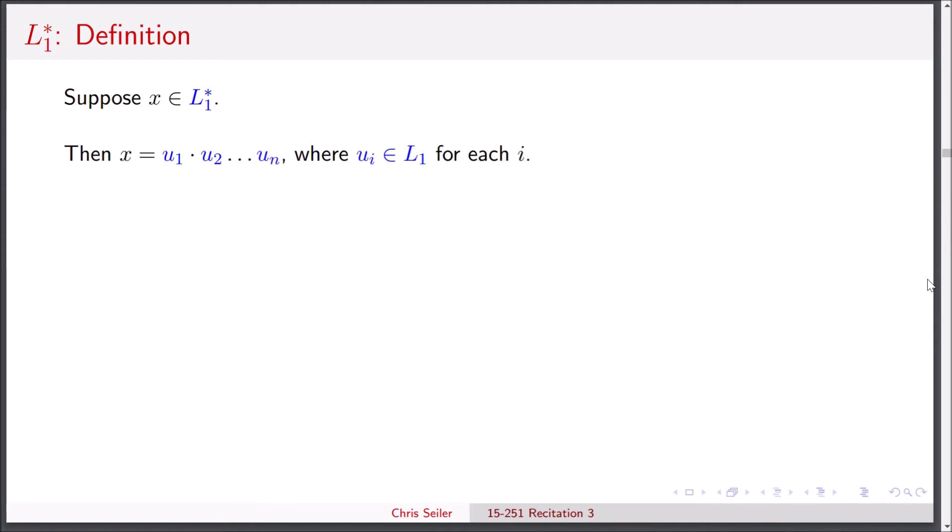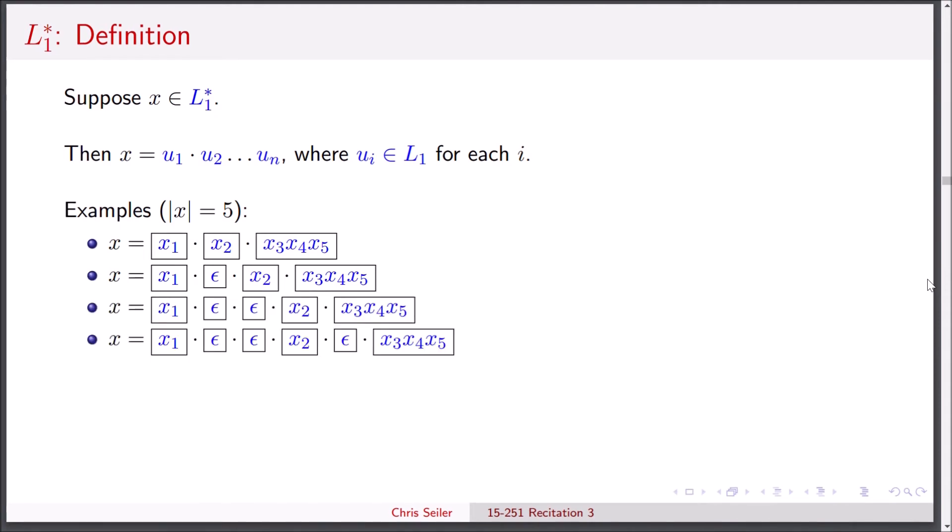If x is in L1 star, then we can break it up into u1, u2, up through un, where these are all substrings of x, and each ui is in L1. Let's look at examples of how we can break x up in this case. We could break x into x1, x2, and then x3 through x5. But remember, we could also add an empty string somewhere, perhaps between x1 and x2. And in fact, we can add another one and another one. So we see a problem. There are actually infinitely many ways we could split x into these possible ui substrings. So it won't really suffice to use the same strategy that we used last time. We have to be a little bit clever.